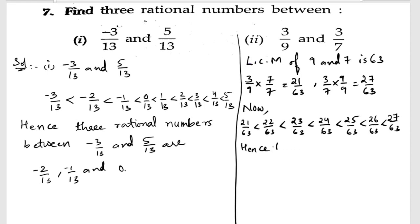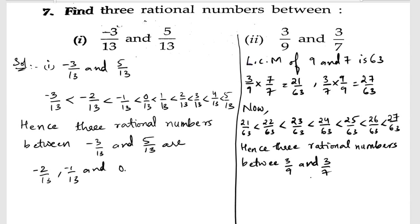Hence, three rational numbers between 3/9 and 3/7 — we can select any three. Here we take: 22/63, 23/63, and 24/63. These are the required three rational numbers.